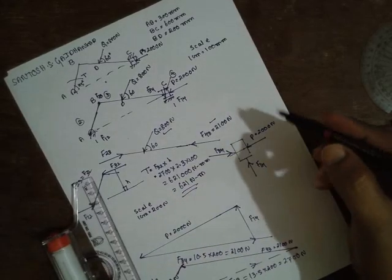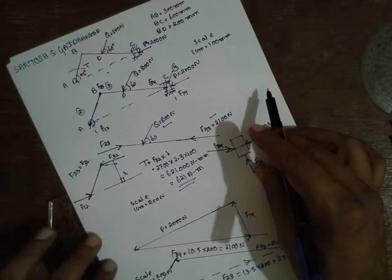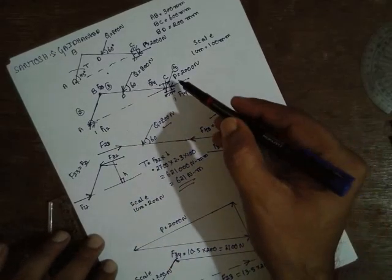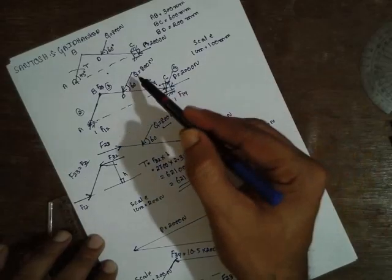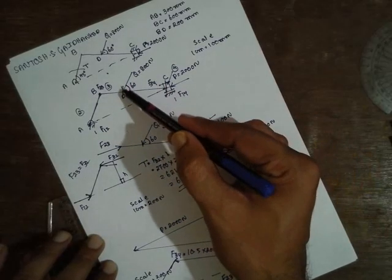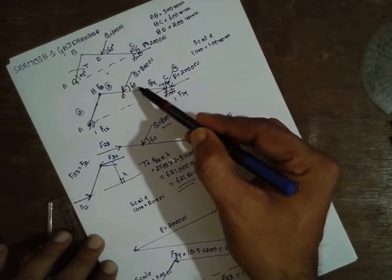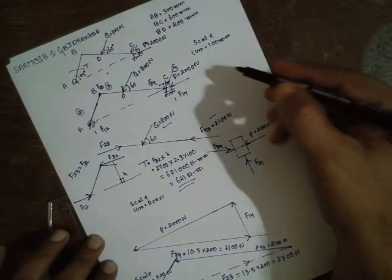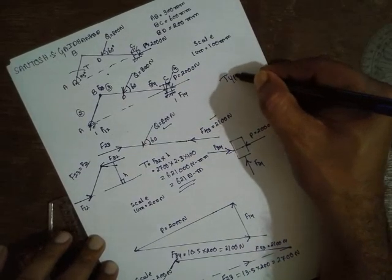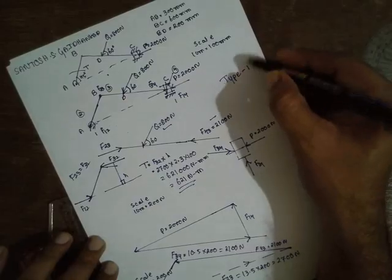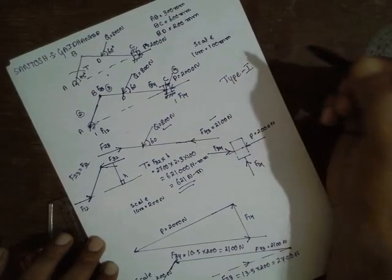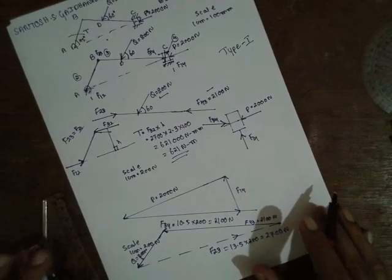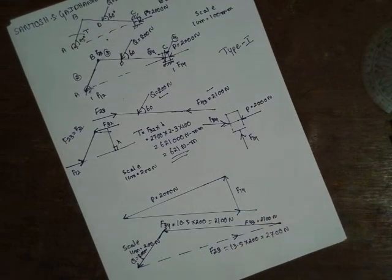It is around 13.5 into scale 200 N. The answer will be 13.5 into 200, 2700 N. Substitute here, because F23 is nothing but here F32. Substitute here the value 2700 into H. H is around 2.3 into scale 100. You get the answer: 27 into 2.3 into 100 will get the answer 6210 N·mm. Just divide by 1000, you will get answer as 6.21 N·m. This is a type one problem. One more type is there where you have to go for split form. First you have to find out the torque of this one, next you have to find out the torque of this one by using the superposition method. This is the easiest method. This is a type one method you can find out directly without multiple, without adding T1 and T2. Thank you very much for listening.